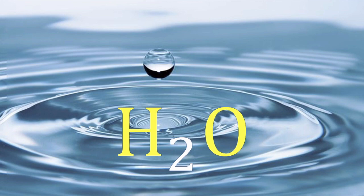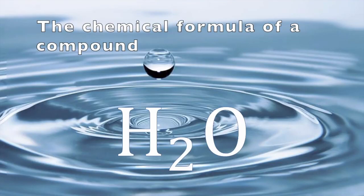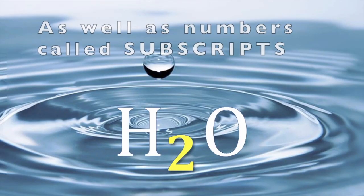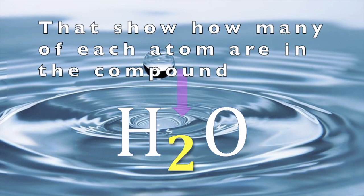H2O is an example of a chemical formula, and every single compound can be represented with one. The chemical formula of a compound includes the symbols for the chemical elements that make up the compound, as well as numbers called subscripts that show how many of each atom are in the compound.